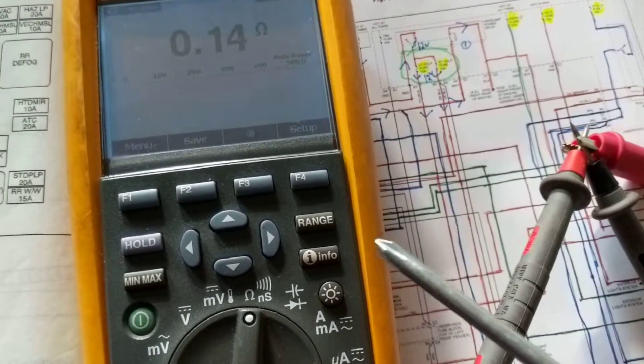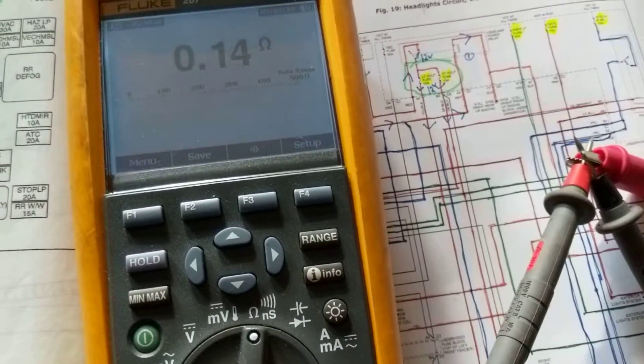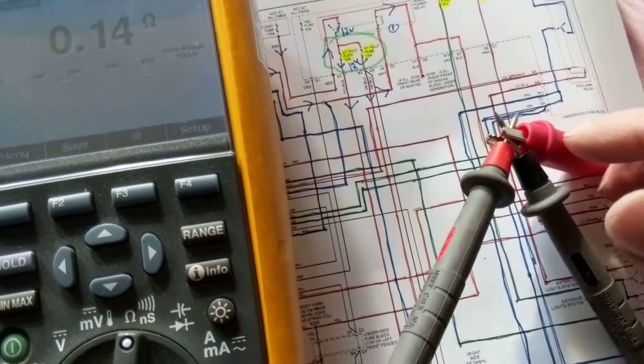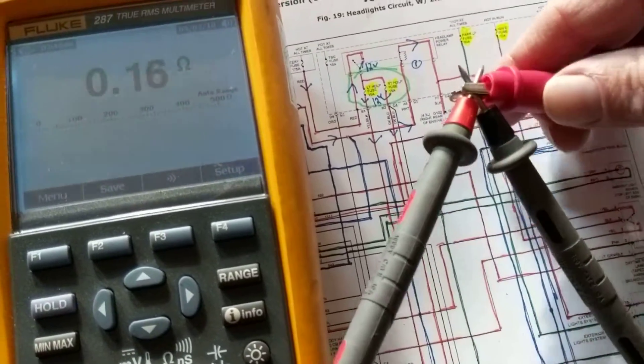You want it to measure 0.2, 0.3, not one ohm. That's way too much. So therefore always make sure the leads are shorted together. That's the first thing. Now let's take this apart.